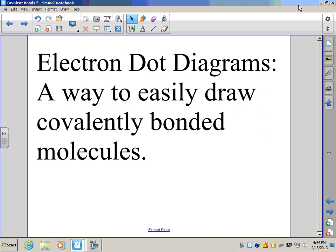You've often seen in class where I have drawn an atom and you draw the nucleus and then the first level of electrons and the second level of electrons. That works, but the larger the atom gets, the more complicated that gets. The electron dot diagram is a way to easily draw atoms and covalently bonded molecules.